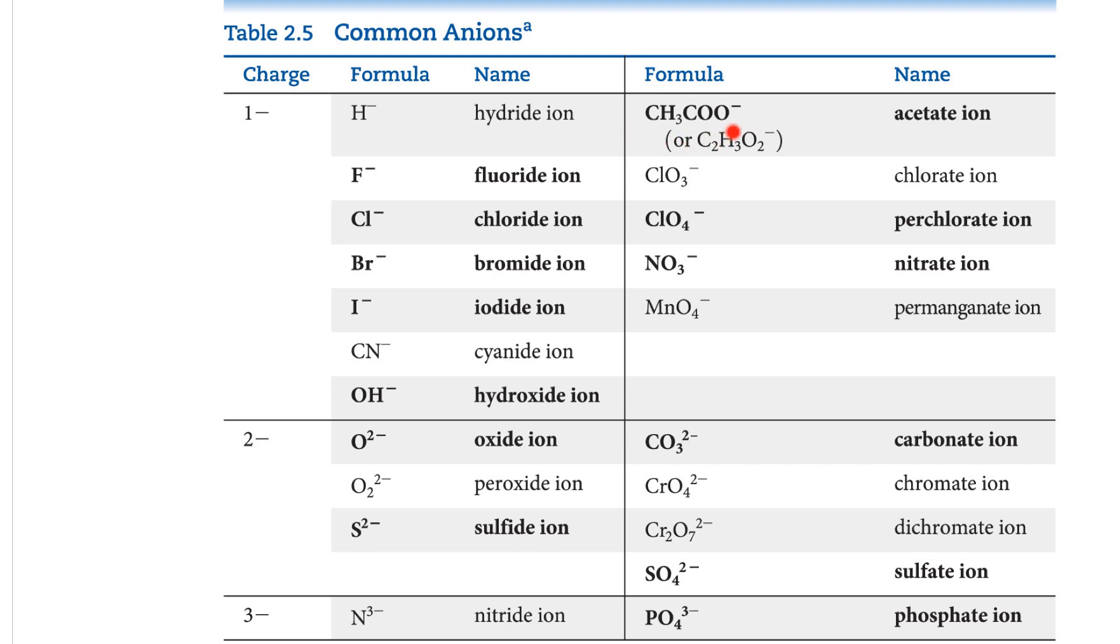This is the big long one everyone's scared of. This is acetate, C2H3O2, all negative 1. So the whole thing acts as a negative 1. And then chlorate, perchlorate, nitrate, permanganate. Carbonate, chromate, dichromate, sulfate, phosphate. So we'll look at these later, these polyatomic ions, more than one atom.